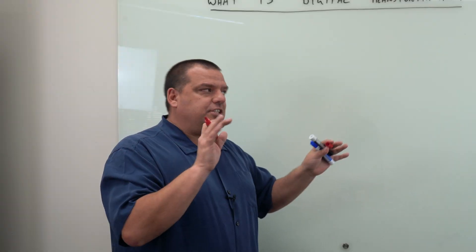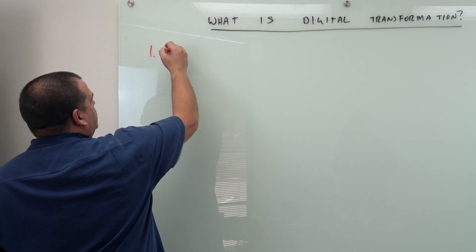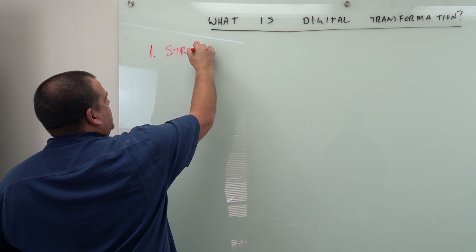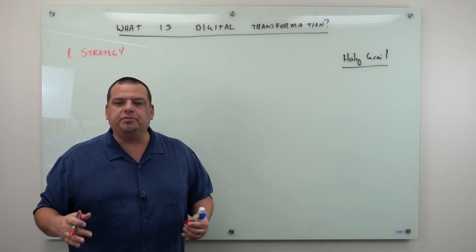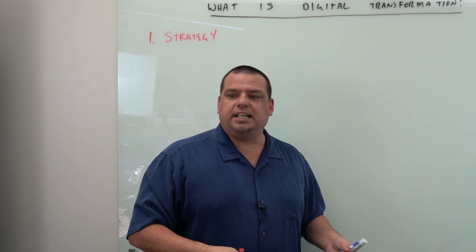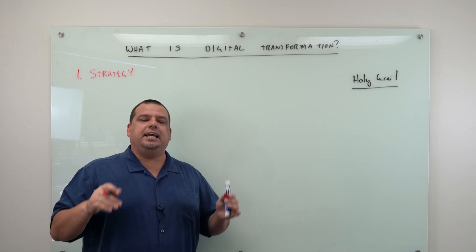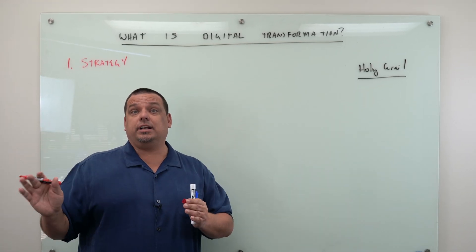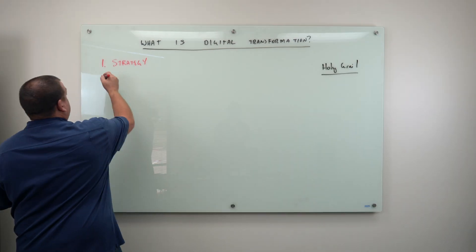We're going to do a deeper dive in this video on what digital transformation is. Number one, most importantly, digital transformation is a strategy. It's not a project, it's not a movement, it's not a process, it's not a system. It is a strategy — a strategy for changing the way manufacturers operate.